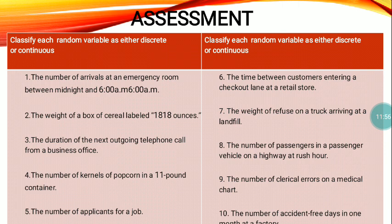Now I will be going to read the assessment. We have here 10 item test. Here's the instructions: classify each random variable as either discrete or continuous. Number one: the number of arrivals at an emergency room between midnight and 6 o'clock a.m.